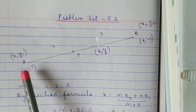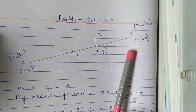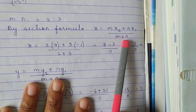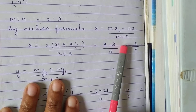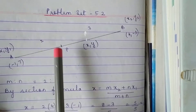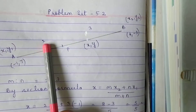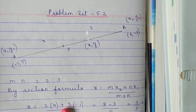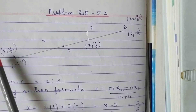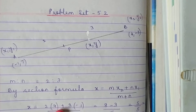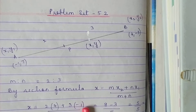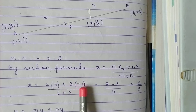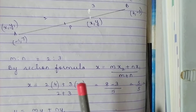Using the section formula, the X coordinate of point P is MX2 plus NX1 upon M plus N. M is 2, X2 is 4; so 2 into 4 plus N is 3, X1 is minus 1; so 3 into minus 1, upon M plus N which is 2 plus 3 equals 5. Substituting: 2 into 4 is 8, 3 into minus 1 is minus 3, so 8 minus 3 is 5 upon 5. My answer is 1.